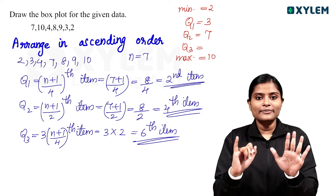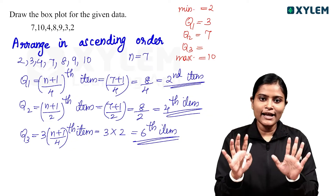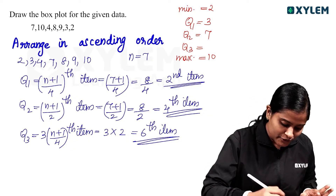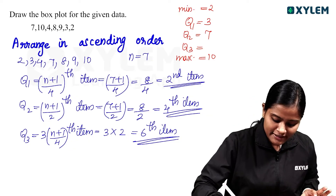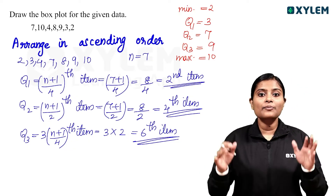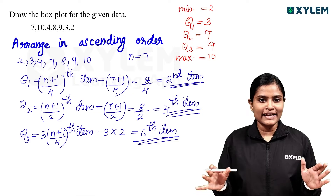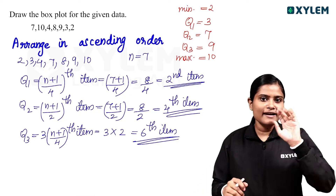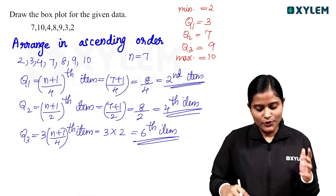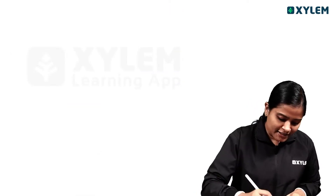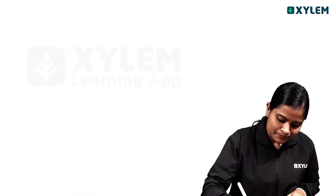The 6th item is 9, so Q3 is equal to 9. We will now construct the boxplot using these values.